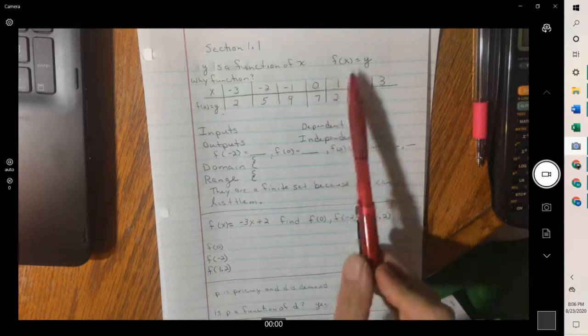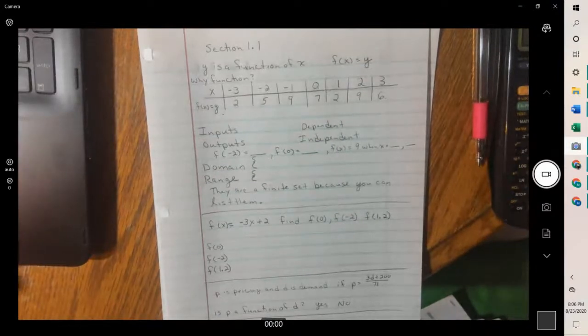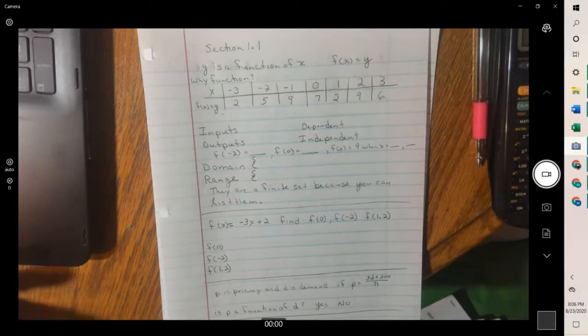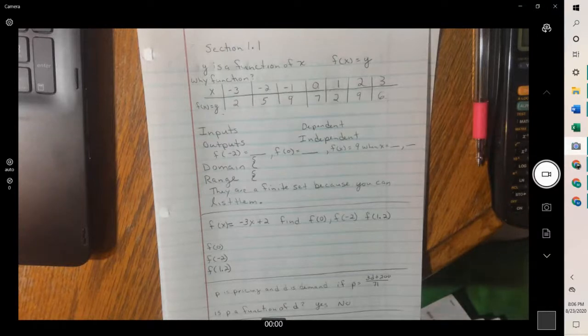But the reason that f of x is nice is because you use c of x for cost, p of x for profit, r of x for revenue, and then you know what each of your equations are when you have more than one equation. And so that's one of the main reasons for the f of x symbols.